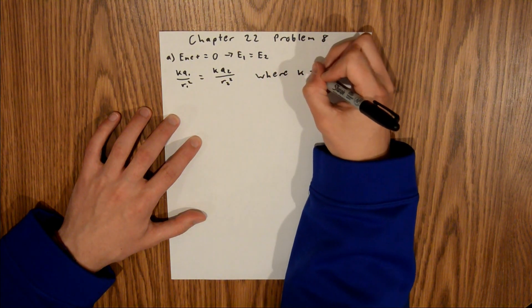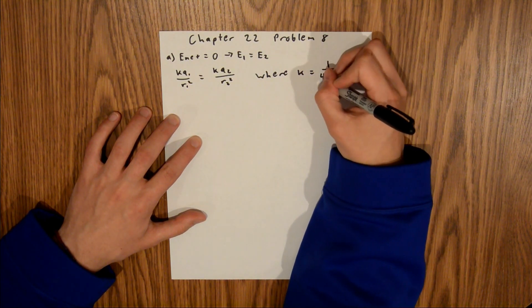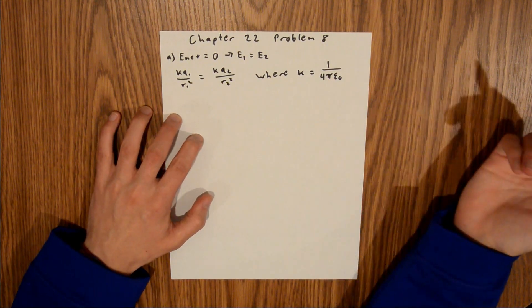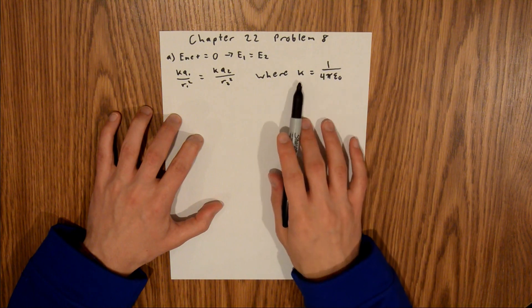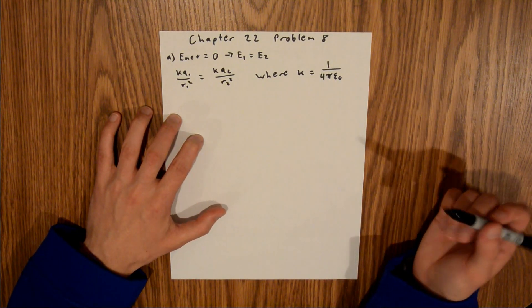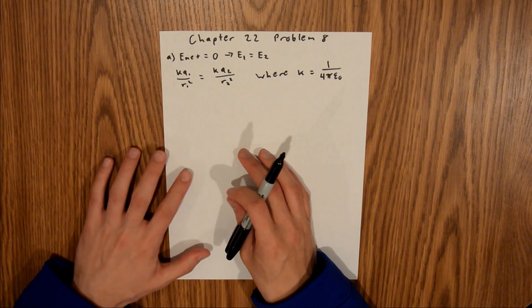where k is equal to 1 divided by 4 pi epsilon sub zero. And you can write it either way, I just write it as a k, in this case, just because it's easier and less you have to write, so it's just less to keep track of.